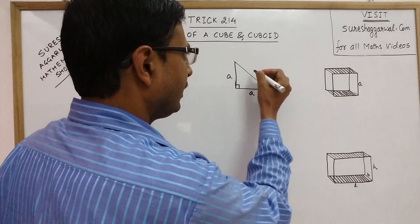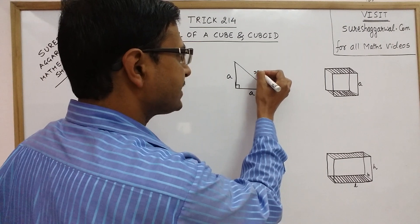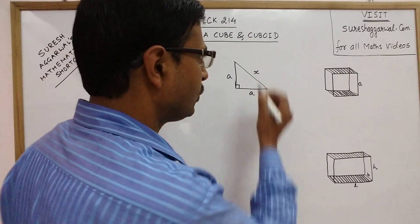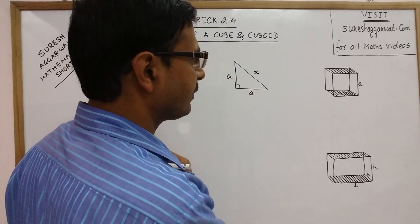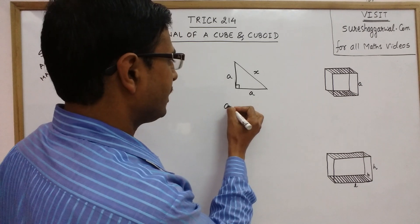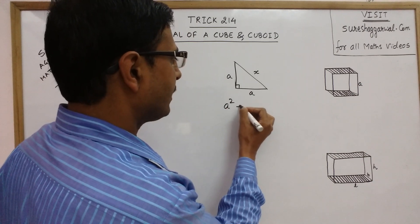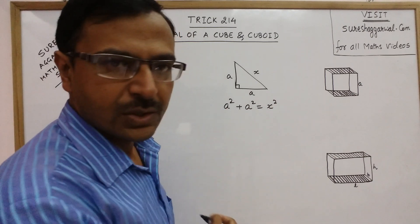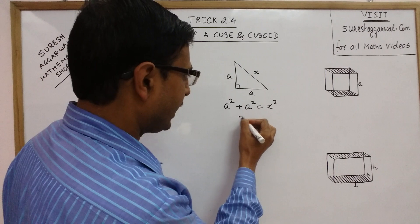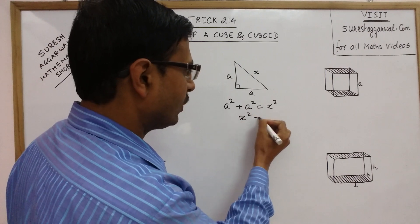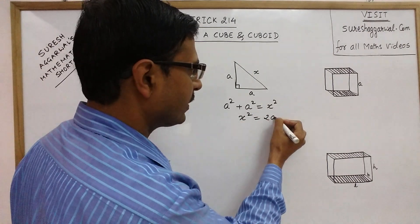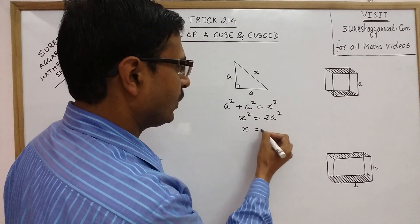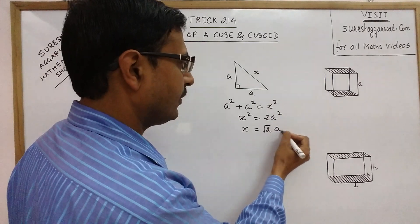Then if you find X, the hypotenuse of this right-angled triangle, using Pythagoras theorem, this will be A² + A² = X². So X² will be equal to 2A², or X will be equal to √2·A.